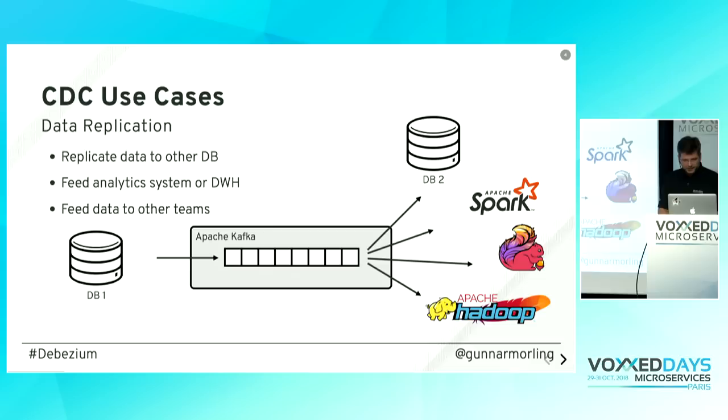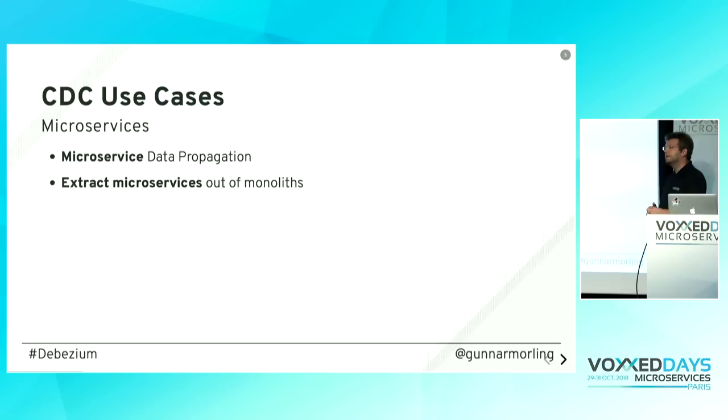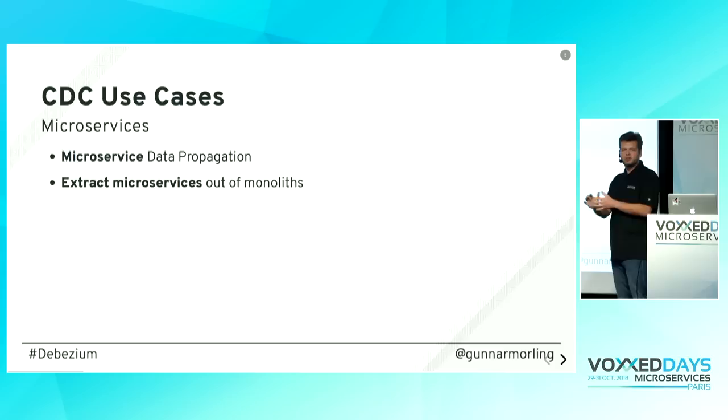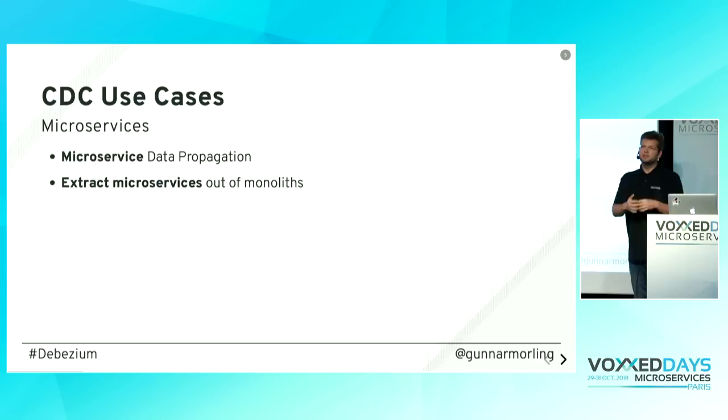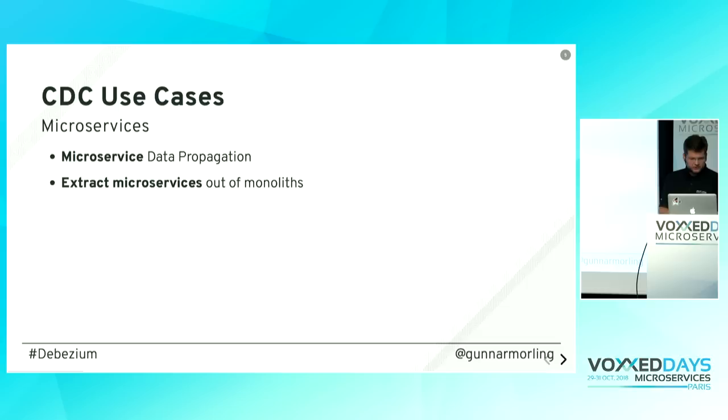There's of course more to it. CDC enables lots of interesting use cases for microservices, which I'll cover in a bit. You could use change data capturing to keep multiple microservices in sync, and you could also think about extracting microservices from existing codebases. Very often you won't start on a greenfield — you have existing monolithic applications you'd like to migrate to microservices, and CDC can help you do those extractions.